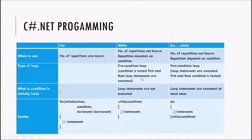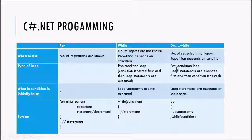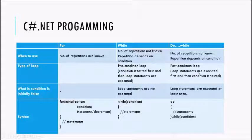In the while loop, the statements are executed only if the condition is true. In case of the do-while loop, it is also called a post-condition loop, which means the loop statements are executed first and then the condition is tested. If the condition is true, it will go back to 'do' and the loop will continue.